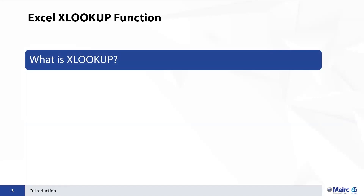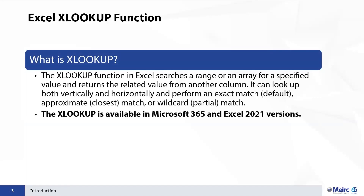Starting with the Excel XLOOKUP function — this is a fairly new function introduced by Microsoft Excel. It searches a range or array for a specified value and returns the related value from another column. It's like what we used to do in VLOOKUP or HLOOKUP, but it is by far more advanced. It can look up both vertically and horizontally and perform an exact match or an approximate match.